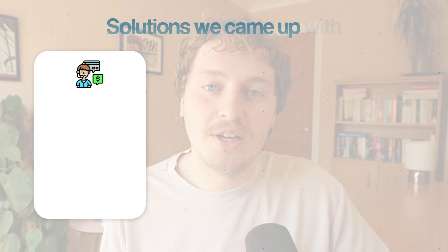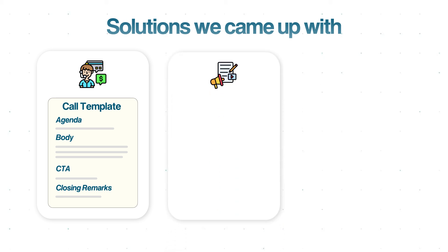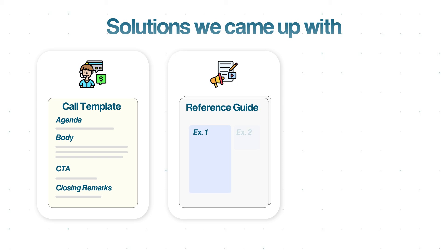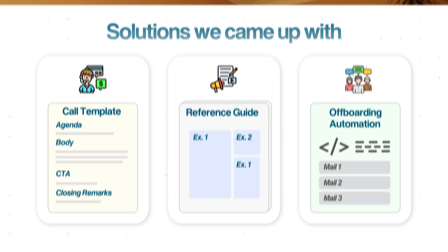Here's what we came up with. For the strategy call, we created a call template with an agenda that acted like a script the team member was able to more easily follow. For writing ad copy, we created a reference guide with all the different types of examples that the agency liked to use, that the team member was then able to emulate when creating copy. And finally, for gathering feedback and testimonials, we created an offboarding automation that sent out a series of emails at the end of the client project asking the client for testimonials. After some time, the founder told me that he was finally able to get these tasks off his plate and win back some time he could spend in other areas of his business.